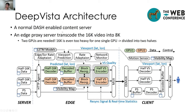This shows the DeepVista architecture. We have a normal DASH server which holds the content, an edge server which does the transcoding, and a client that does the playback. There are two GPUs in the edge server because one GPU is not enough for decoding and transcoding. We divide the whole 16K video into two halves; for each half, one GPU handles decoding, block reorganizing, and encoding. Between the two GPUs there is data exchange during the block reorganizing stage. We also have viewport prediction, rate adaptation, and motion sensing modules in the system.